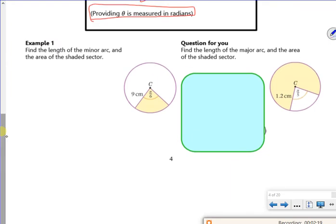So in example one, it says find the length of the minor arc, so minor is the smaller one. And the area. So for the length, I'm going to use l equals rθ. So l is 9 times by π over 6.